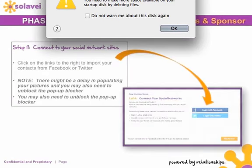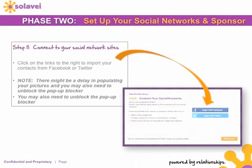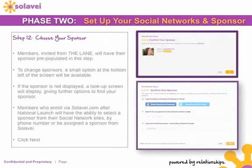Step eleven of phase two is to connect to your social network sites. This is optional — if you'd like to skip this and do it later, just press 'Skip Now.' To connect and import your contacts from Facebook or Twitter, click the appropriate icon. Note that there might be a delay in populating your pictures and you may need to unblock your pop-up blocker.